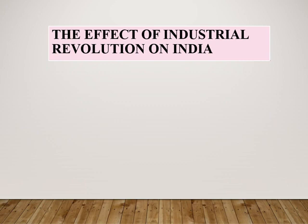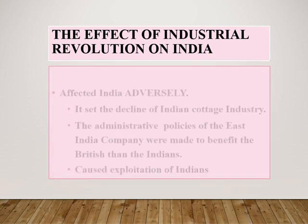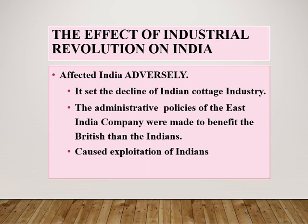The Industrial Revolution affected India adversely, as it was a colony of England at that time. It led to the decline of the Indian cottage industry. The administrative policies of the East India Company were made to benefit the British rather than the Indians. Railways made it possible to reach rural areas for sale of goods, and this turned into monetary exploitation of the Indians.